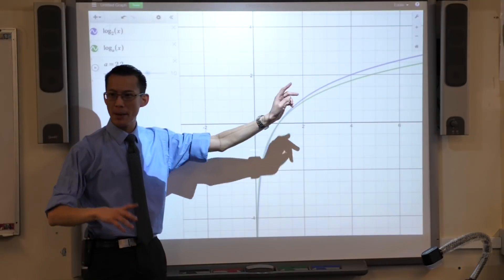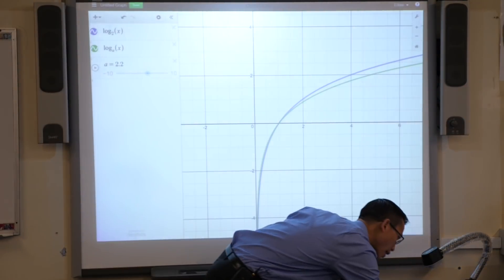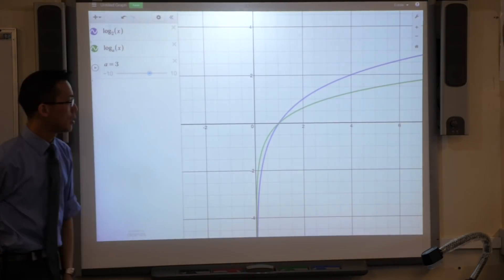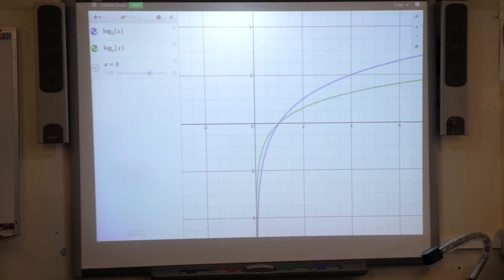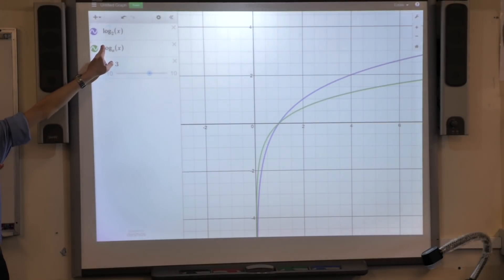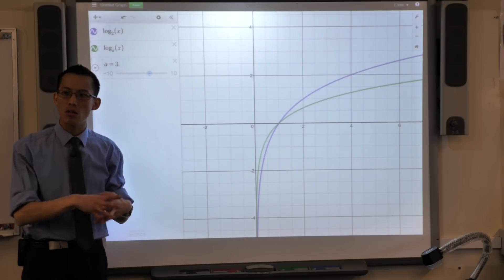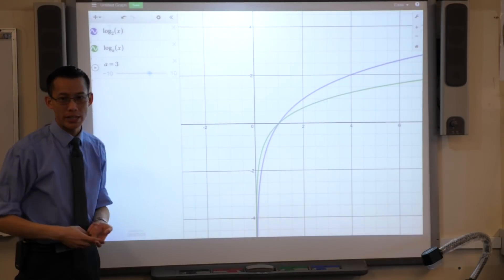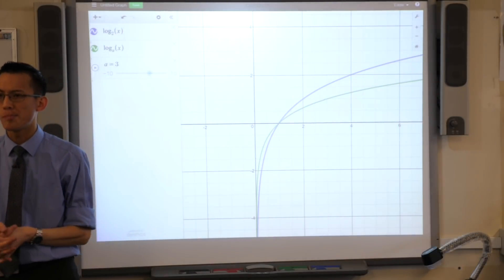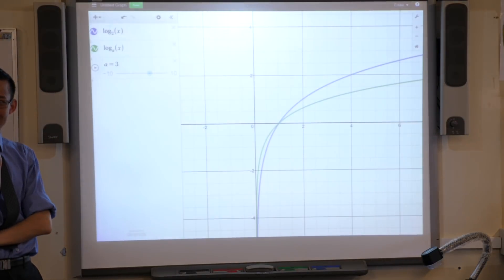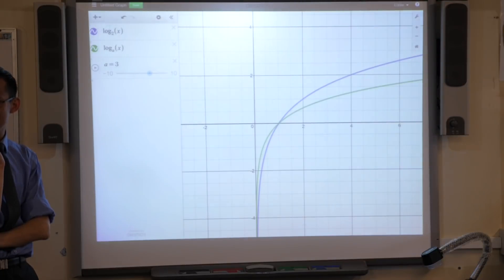And as you change the base, do you notice the shape kind of flexes around a little bit? For example, if I go log base 3. Yes, you're right. Well, have a look at this. The green, my green one is log base 3 and my purple one is log base 2. How would you describe the difference? When the base gets bigger, you get this green graph. How would you describe it?